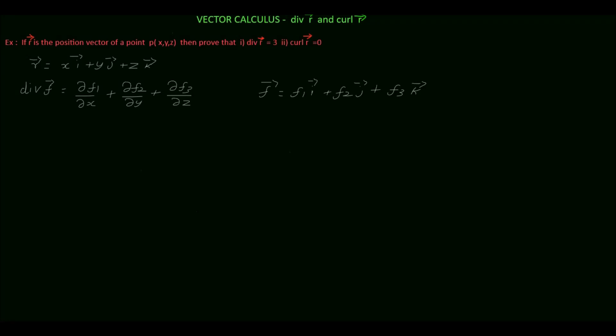In this tutorial, we will prove divergence of r vector equal to 3 and curl of r vector equal to 0. r vector is a position vector at the point x, y, z. So the r vector is equal to xi vector plus yj vector plus zk vector.